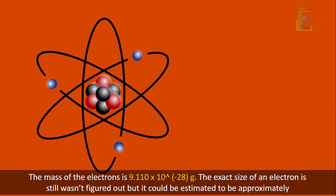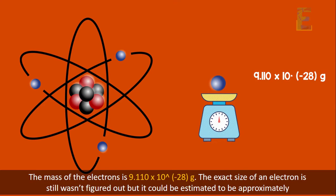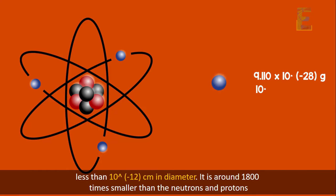The mass of electrons is 9.110 times 10 to the power of negative 28 grams. The exact size of an electron still wasn't figured out, but it could be estimated to be approximately less than 10 to the power of negative 12 cm in diameter. It is around 1,800 times smaller than the neutrons and protons.